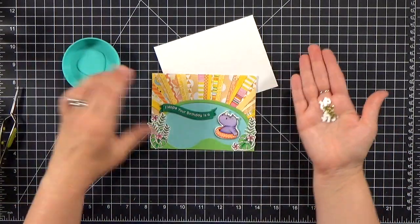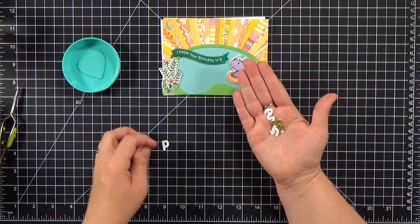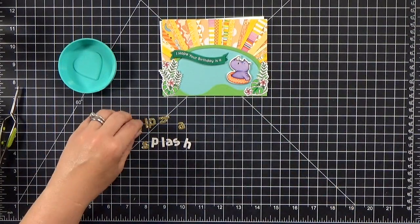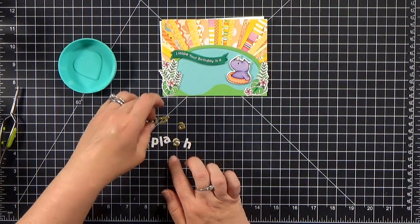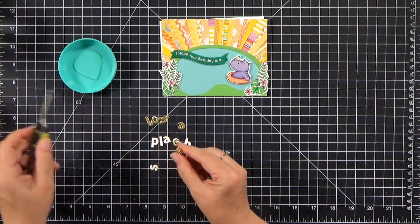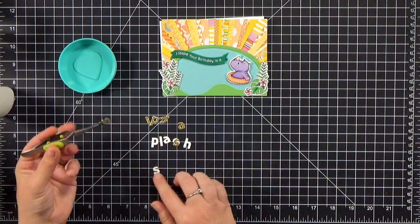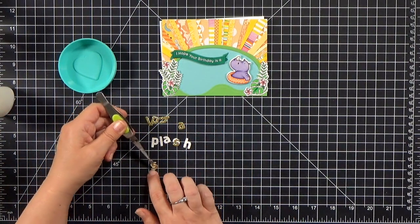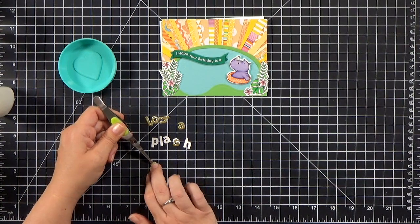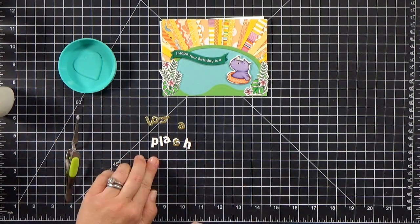And then now I've got the rest of my sentiment for the word splash. I cut it out from gold and from white cardstock. And I'm just going to take the letters. Again, the tweezers are super handy here. And I'm going to stack them on top of each other, slightly offset.